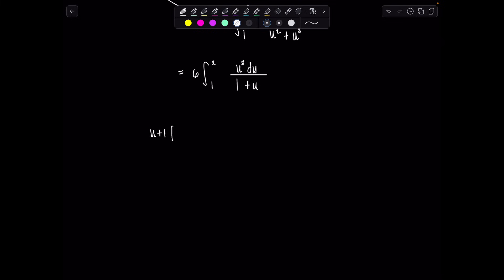I'll write it this way. u plus 1 divided into u cubed. So just ask yourself, what do I multiply u by to make it u cubed? u squared. Then you distribute that. So that'll be u cubed plus u squared. Subtract that row from the row above. Negative u squared. And then repeat. What do I multiply u by to make it negative u squared? Negative u. And then distribute that back out. So negative u squared minus u. I subtract this row from the row above. And now I get plus u. We can keep dividing. Plus 1. And then u plus 1. Subtract it. And then finally, this is my remainder now. Negative 1.